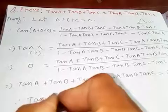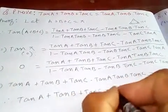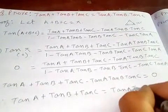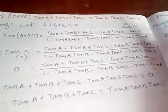So tan A plus tan B plus tan C, which is equal to, if you transfer this here, tan A tan B tan C.